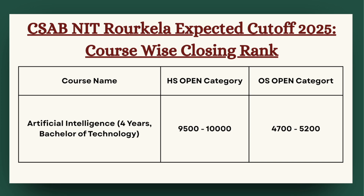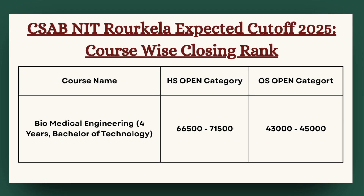Moving ahead in the list we have Artificial Intelligence. For HS open category, the cutoff can be expected between 9,500 to 10,000, and for OS open, the cutoff can be expected between 4,700 to 5,200.